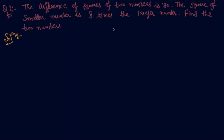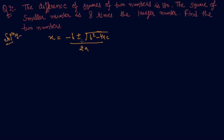Here is another question. We can solve it by either the completing square method, the simple square root method, or directly by formula. From now onwards we will use the formula directly: x equals minus b plus minus root of b square minus 4ac by 2a. Don't forget to write plus minus in the formula.